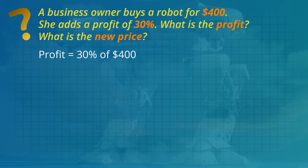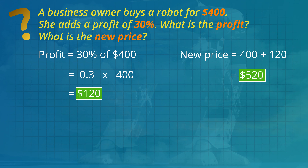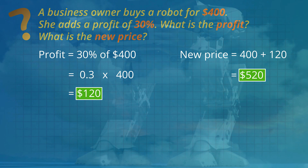We can do the same question with the percentage as a decimal. 30 divided by 100 is 0.3. 0.3 multiplied by 400 is the same $120 profit and the same $520 new price.